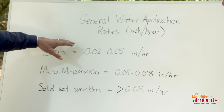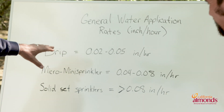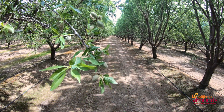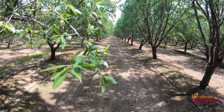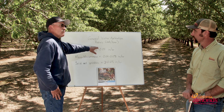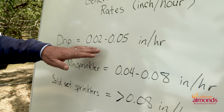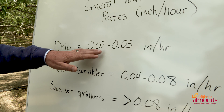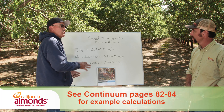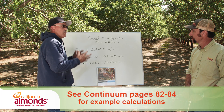What I've listed here is some general water application rates for the different types of irrigation methods. It's where we make the conversion between what the crop used and how long do I run my particular irrigation system to replenish that crop water use. An example: if the ET report said one and a half inches for the past seven days, and I had a drip irrigation system that applied water at five hundredths of an inch per hour, that equates to thirty hours of irrigation to match the water transpired by the crop.